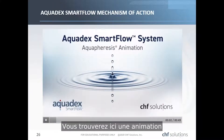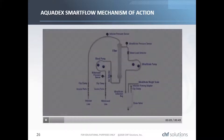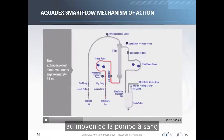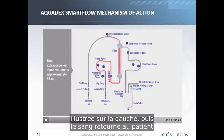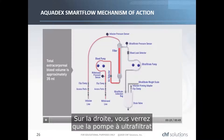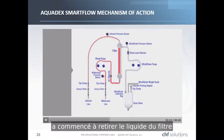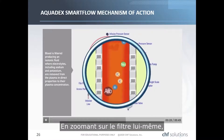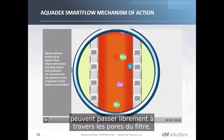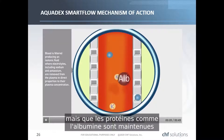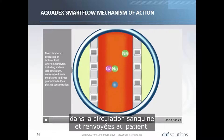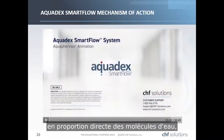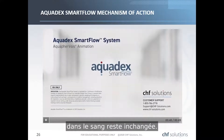The Aquadex system blood circuit works as follows: blood is withdrawn from the patient by the withdrawal line and pushed through the filter by the blood pump. The blood then returns to the patient via the infusion line. The ultrafiltrate pump withdraws fluid from the filter and collects it in a UF bag. Water molecules and electrolytes freely pass through the filter pores, while proteins like albumin are maintained in the bloodstream and returned to the patient. Because electrolytes are extracted in direct proportion to water molecules, the concentration of electrolytes in the blood remains unchanged.